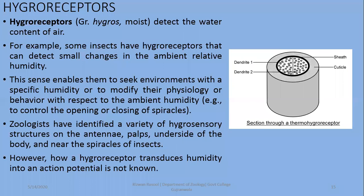Zoologists have identified a variety of hygrosensory structures on the antennae, palps — which are projections of insects or arthropods — on the underside of the body and near the spiracles. Spiracles are small apertures or openings of the insect's respiratory or tracheal system. A hygroreceptor transduces humidity into an action potential; however, the mechanism is not entirely clear. You can assume a simple structure of a hygroreceptor from the diagram.